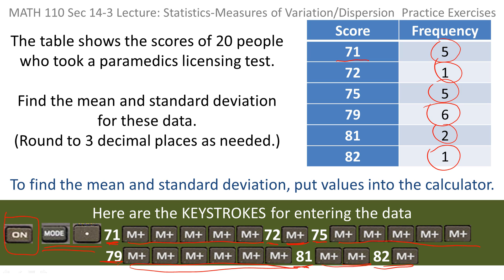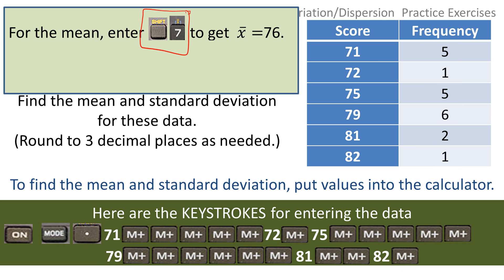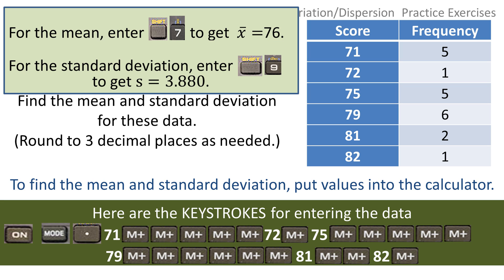Once the data is in, shift seven gives you the mean, which comes out to be 76. And the standard deviation is found by using shift nine, and to three decimal places you get 3.880.